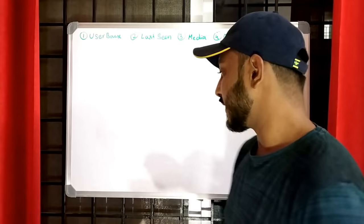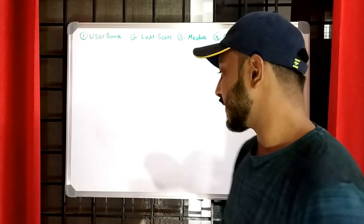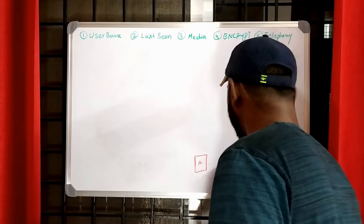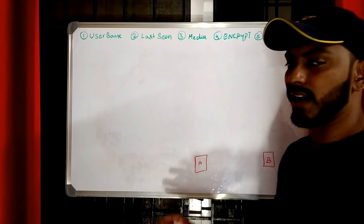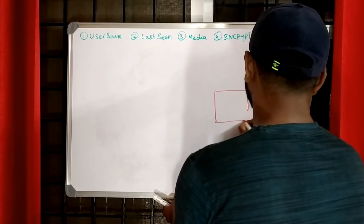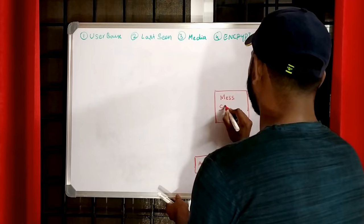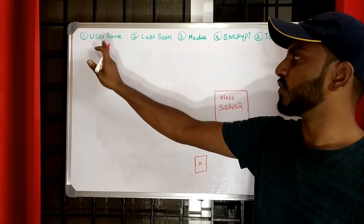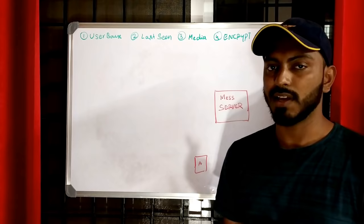Consider we have two parties, client A and client B. As already mentioned, we need a server in between these clients to establish a connection and send messages back and forth — let's call this the messaging server. When we know our user base will be in the billions, one messaging server can't withstand the load, so we need multiple messaging servers. These form a horizontally distributed cluster of servers.